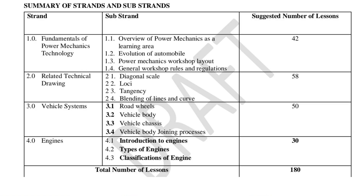The first strand is fundamentals of power mechanics technology. The substrands are: overview of power mechanics as a learning area, evolution of automobile, power mechanics workshop layout, and general workshop rules and regulations — covered in 42 lessons. The second strand is related technical drawing, with four substrands: diagonal scale, loci, and blending of lines and curves — covered in 58 lessons.